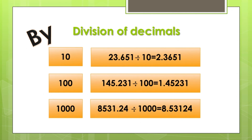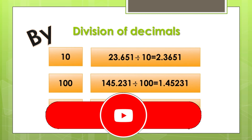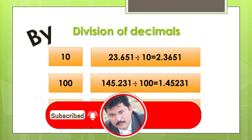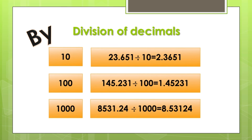जब multiplication करनी है तो decimal point को right side की तरफ move कराना है। और जब division करनी है तो उसका उलट — यानि left side को decimal point move कराएंगे। Ten में one zero है, तो one digit left side move करें। Hundred में two zeros हैं तो two digits left move करें। Thousand में three digits left move करें। इस तरह आप division of decimals by ten, hundred, and thousand आसानी से कर सकते हैं।